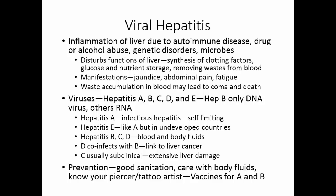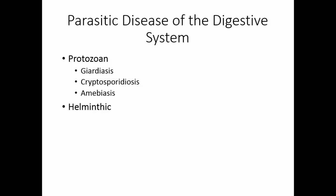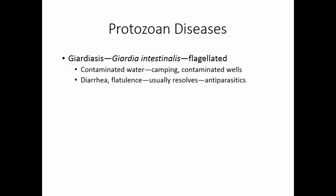There are two groups of parasitic digestive system diseases: protozoan diseases — giardiasis, cryptosporidiosis, and amoebiasis — and helminth diseases, including tapeworms and roundworms. Giardiasis is caused by Giardia intestinalis, a flagellated protozoan typically acquired through contaminated drinking water, especially associated with camping and contaminated well water. The disease presents with diarrhea and flatulence. It usually resolves spontaneously in a few days, but antiparasitics may be given.